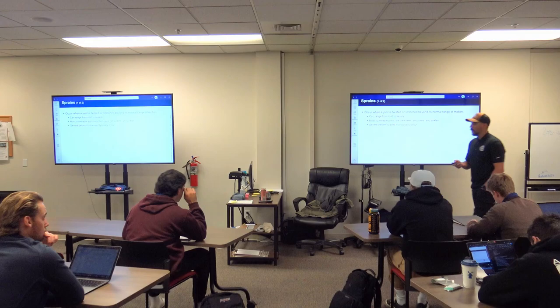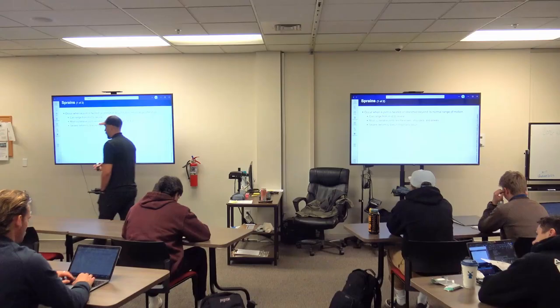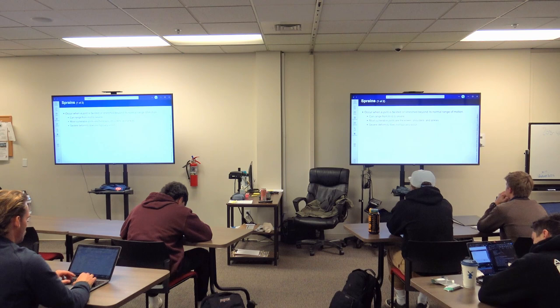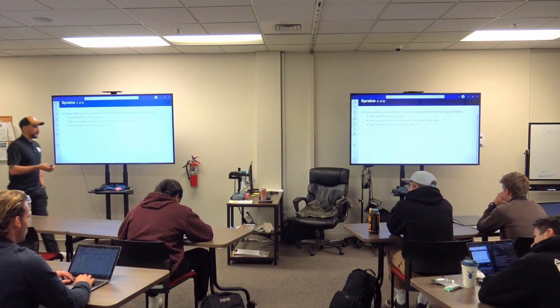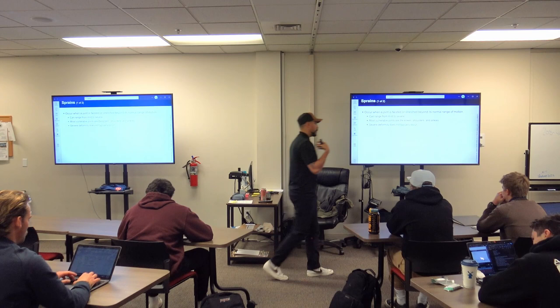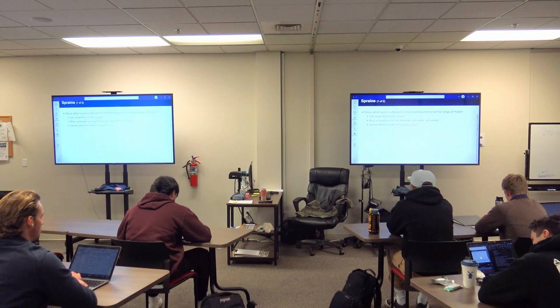A sprain is when the joint is twisted or stretched beyond its normal range of motion, disrupting ligaments and tendons — usually over-stretching the tendons. It's similar to a dislocation in the sense that it starts to weaken the joint, the ligaments, and the tendons, making the whole joint increasingly compromised. That said, just because you have a sprain doesn't mean dislocation is imminent — it's a slow burn.